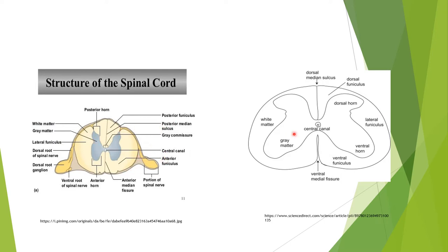This diagrammatic representation of the spinal cord shows the white matter, internal grey matter, the two horns — dorsal horn and ventral horn — and the fissures. This diagram also shows the histology of the spinal cord having the central canal and various horns.